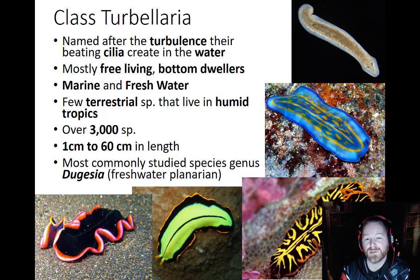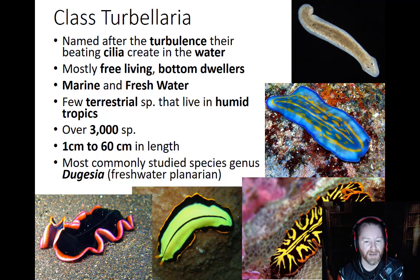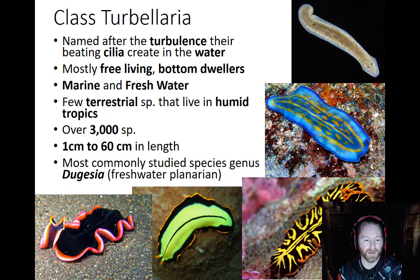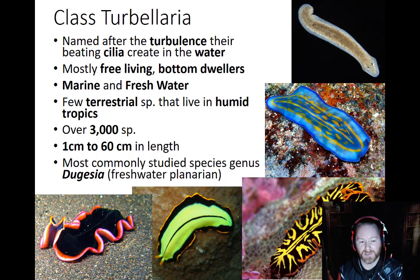Even though they are free-living, most are bottom dwellers, especially marine species. They crawl along the bottom and eat detritus, scavenge, or eat algae. A few are terrestrial but must live in warm, humid tropical areas so they don't dry out. There are over 3,000 species in Turbellaria. Marine flatworms are very colorful and pretty, ranging from 1 centimeter to 30 centimeters in length.